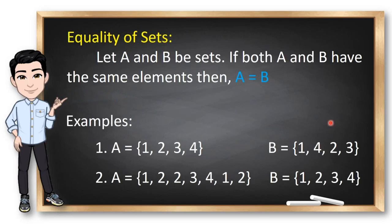And guys, do you know that we also have equal sets? Let A and B be sets. If both A and B have the same elements, then A is equal to B. In number 1, set A here is equal to set B on the other side. Why? Guys, in a set, the order is not important. So, though this is 1, 2, 3, 4 and this is 1, 4, 2, 3, they are equal because they have the same elements and same cardinality.